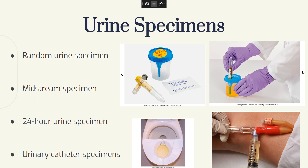Next is a midstream specimen, also called a clean voided specimen or clean catch specimen. It's used to determine if there is a presence of bacteria in the urine. The perineal area is cleaned first to reduce the number of microbes in the urethral area. The person starts to void into the device, then stops the urine stream and a sterile specimen container is placed in position. Then the person voids into the container until the specimen is obtained.